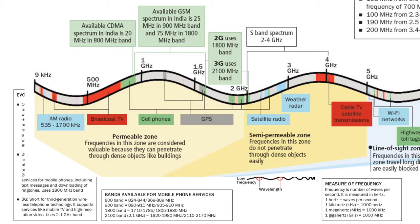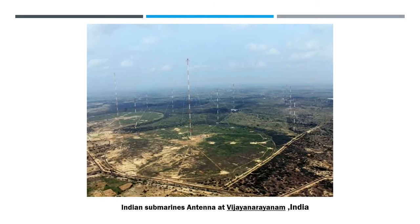These VLF or very low frequency radio waves have large wavelengths and their antennas are huge. This is a picture of VLF antenna used to communicate with Indian submarines far away in the ocean. Communication with far away submarines was the actual incentive for the development of radio waves. This antenna is situated in Vijayanaram, India.